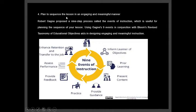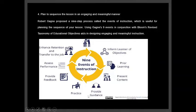The fourth step is to plan to sequence the lesson in an engaging and meaningful manner. Robert Gagné proposed a nine-step process called the events of instruction: inform learners of objectives, activate prior learning, present content, provide guidance, allow practice, provide feedback, conduct assessment and performance, and finally enhance retention and transfer to the job. These nine events give structure and sequence to your lesson.